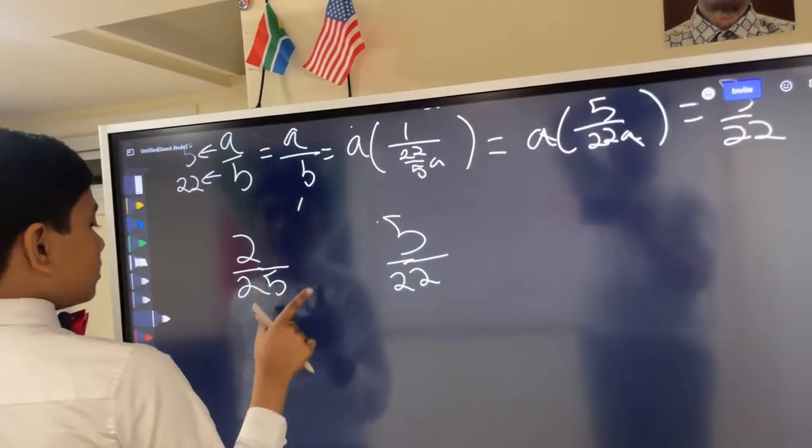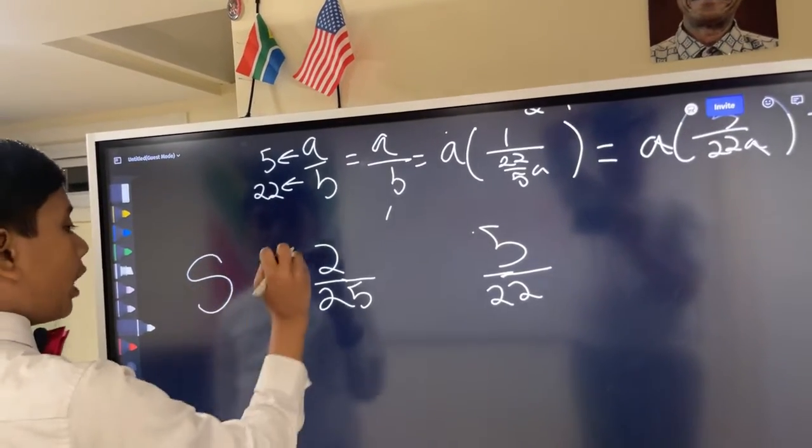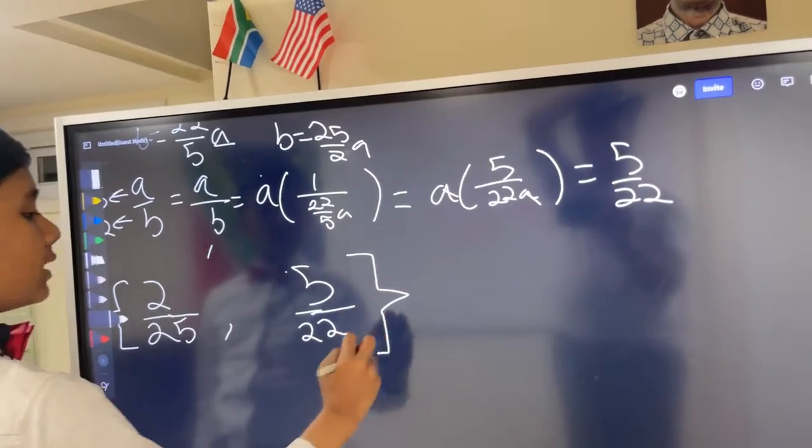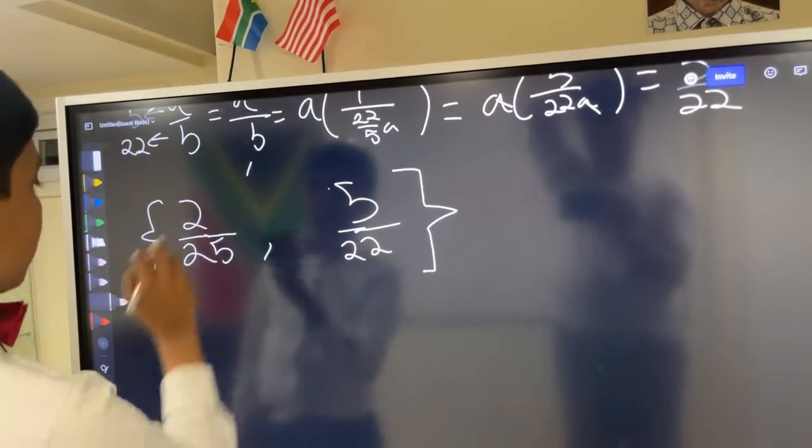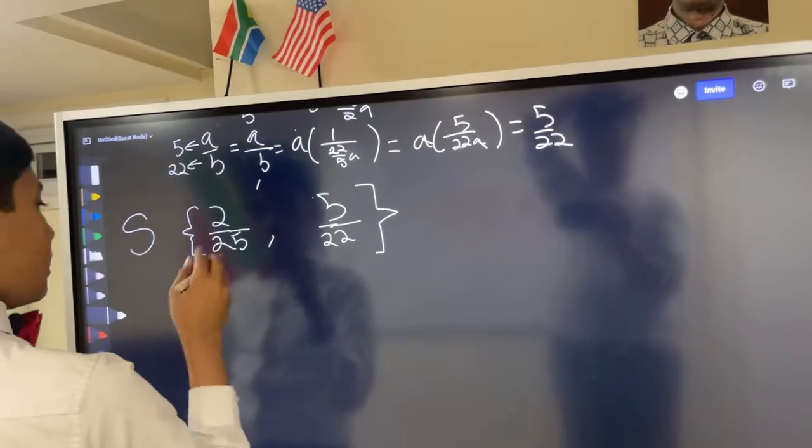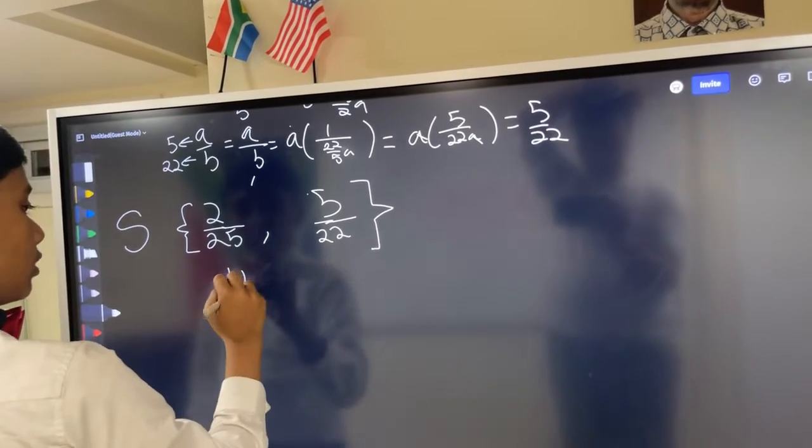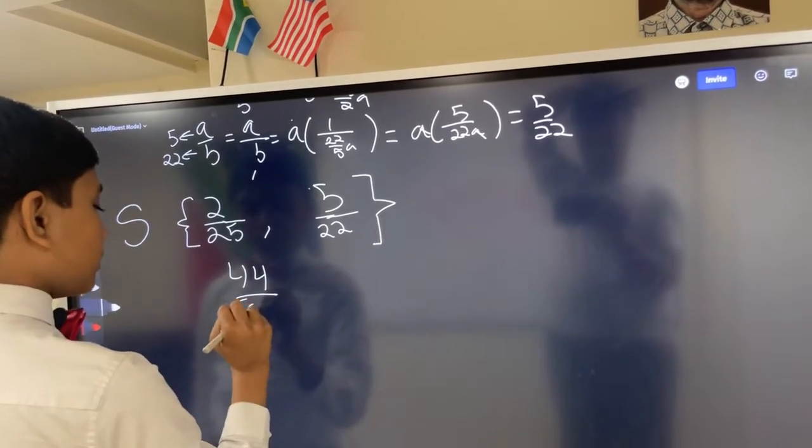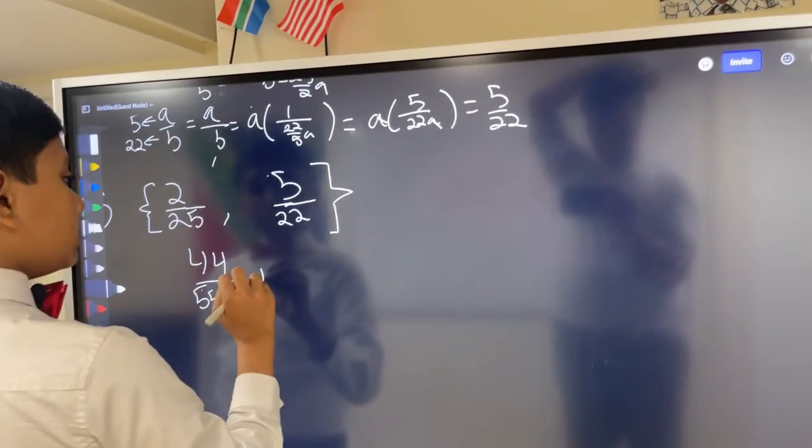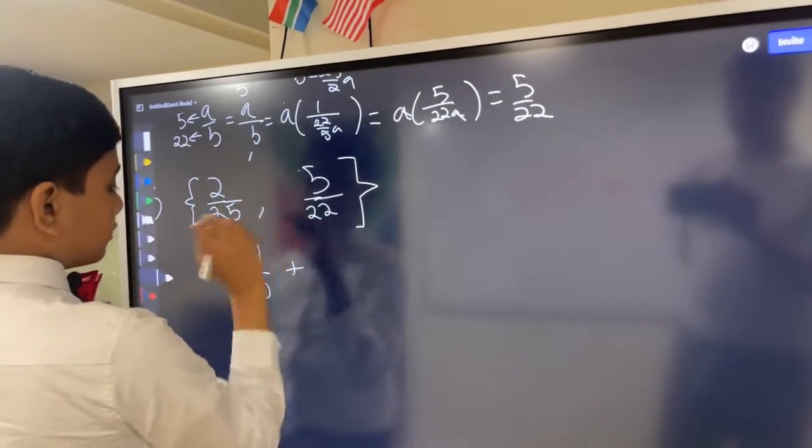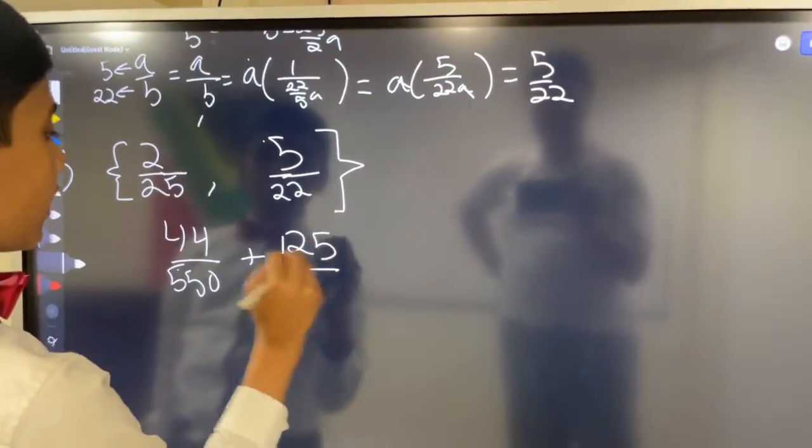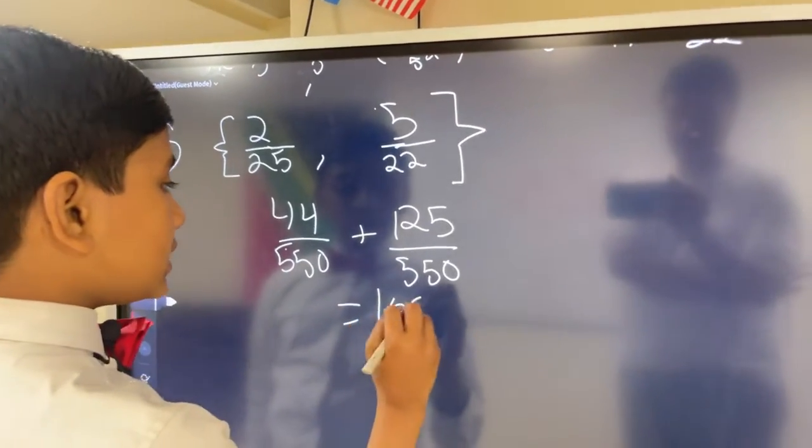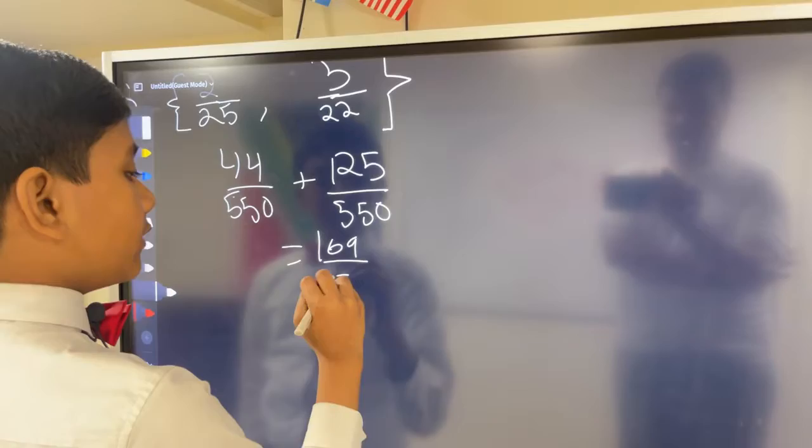So now, these are the only two possible values of R. So the set S only has two elements. So now, what's the sum of these elements? Well, we can sum them by taking a common denominator. So we multiply this by 22 over 22. 25 times 22, 550, I think. And then plus 5 over 22. 5 times 25 is obviously 125. 25 times 22, 550. And that gives us 169 divided by 550.